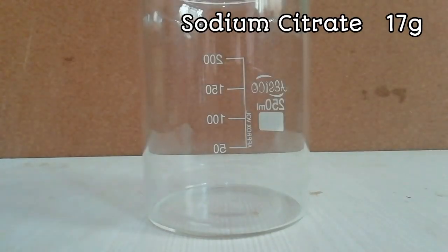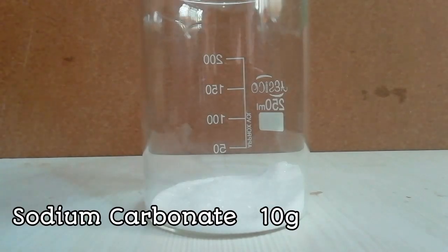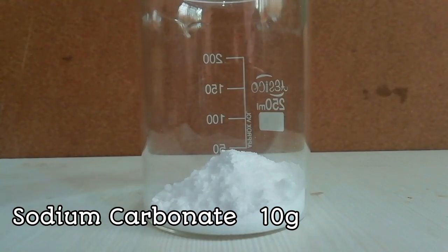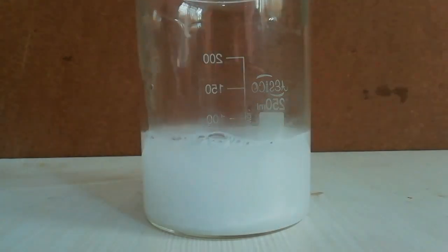Then add 17 grams of sodium citrate and 10 grams of sodium carbonate to a beaker. Then dissolve both compounds in 80 milliliters of warm water.